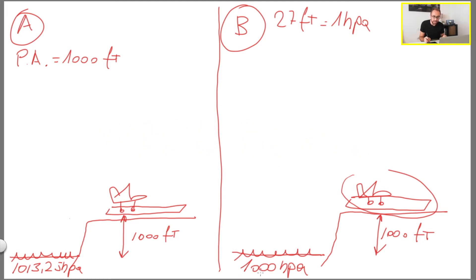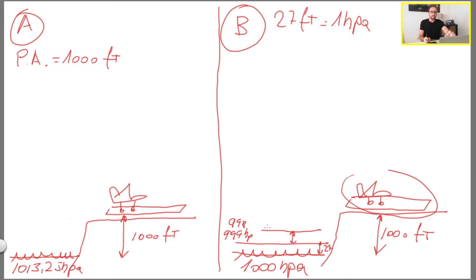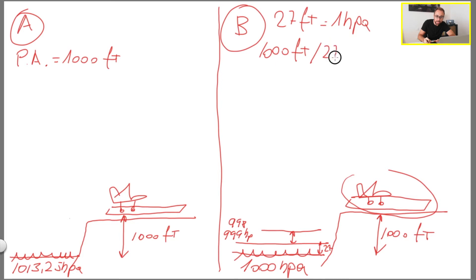So if the QNH in example B is 1000 hPa, at 27 feet above mean sea level the pressure is 999 hPa, another 27 feet above that is 998 hPa, and so on. Since the height from mean sea level to the airplane is 1000 feet, we can calculate the pressure around the airplane. We take 1000 feet and divide by 27 — because dividing by 27 feet, we'll know how many hectopascals of difference there are from mean sea level to the airport. 1000 divided by 27 gives us 37.03, let's call it 37 hectopascals.